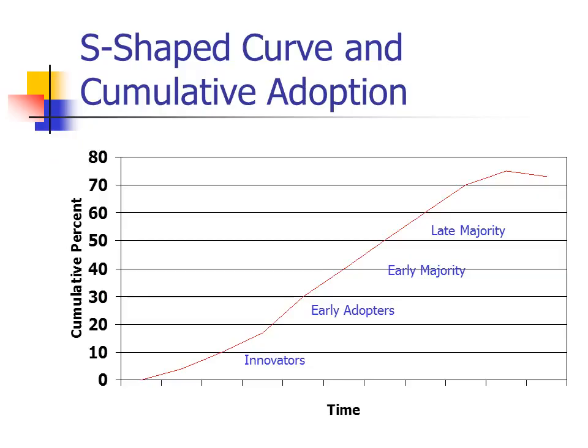Here's another graph showing an S-curve, or spline curve, that plots the cumulative percent of adopters on the Y-axis against time on the X-axis. As we add the different classifications of individuals adopting the product or taking advantage of the service, we reach a saturation point of about 75% or so.